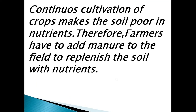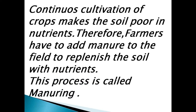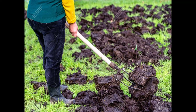Continuous cultivation of crops makes the soil poor in nutrients. Therefore farmers have to add manure to the field to replenish the soil with nutrients. Such a process of adding manure to the field is termed as manuring. In this picture you can see a farmer preparing manure and adding it to the field.